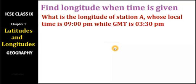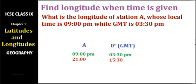First, read and understand the question. Then we list the details we have. In the question we have two stations: station A whose longitude is not known, and another station at zero degrees longitude — that is Greenwich Mean Time. The times of both places are given: station A is 9 p.m. and GMT is 3:30 p.m.